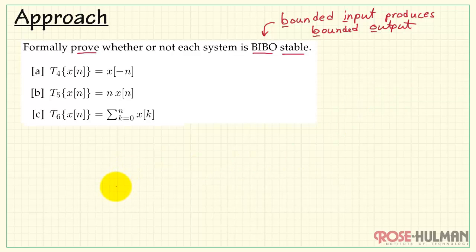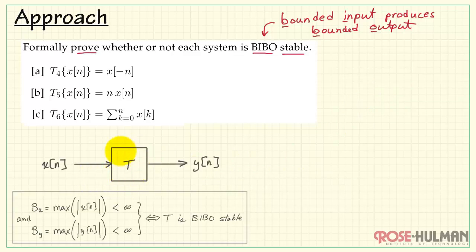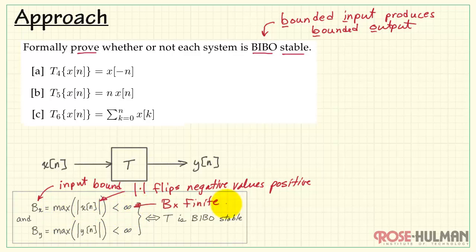Let's take a look at a general proof structure we can use for this. I have a system T with an input X and an output Y. I have a bound B sub X, which is the maximum absolute value of X. The absolute value flips any negative values positive. And of course, we are trying to identify that maximum value as our bound. We'll define, for the purposes of this proof, the bound on the input to be finite.